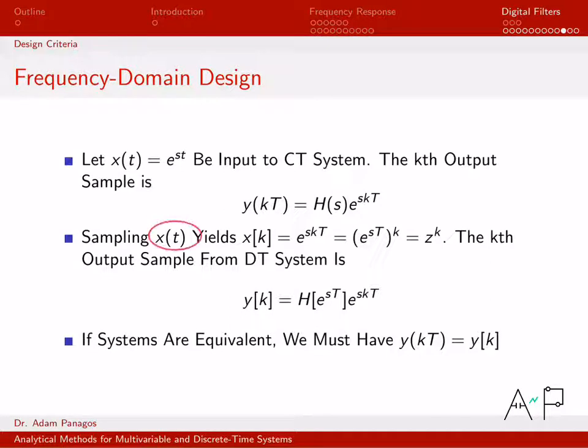What about when I sample the input? Well, x of t, when I replace t with k capital T, that ends up with e to the s k capital T, which is my discrete time signal x of k. And I can think of this as e to the st raised to the k, which looks an awful lot like a complex number raised to the k.